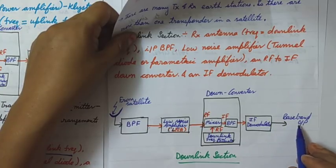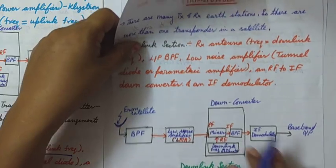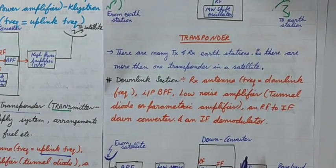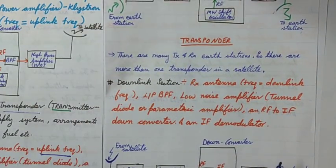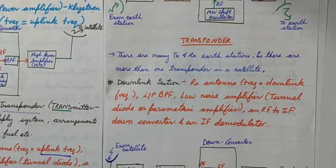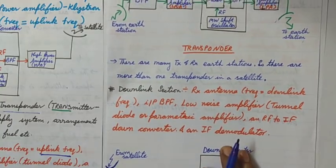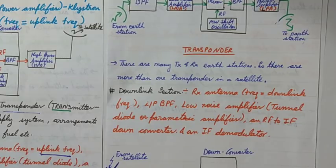At the end, the output is given to the user destination. This is the downlink section. These are the three main sections of satellite communication. This topic is now complete, and in another video I will explain why the uplink frequency is greater than the downlink frequency. Thank you, and please subscribe to my channel.